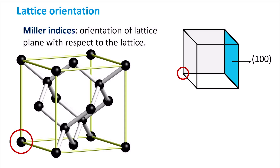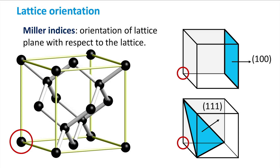We now return to the unit cell. In this unit cell many different lattice orientations can be found, which are indicated as the orientation of a lattice plane with respect to the lattice. Using the so-called Miller integers, a vector representation describing the orientation of these lattice planes can be given. For instance, the lattice plane with 1-0-0 orientation is shown here with respect to the atom marked in red. Another often used orientation is the 1-1-1 direction as shown here below.